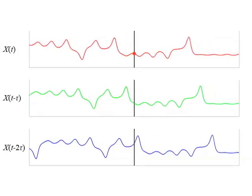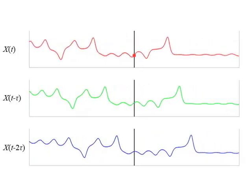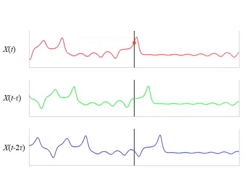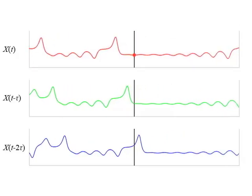Takens' theorem says that we should be able to use these three time series as new coordinates and reconstruct a shadow version of the original butterfly manifold. So let's see how this works.